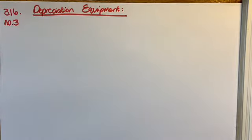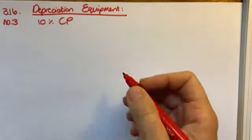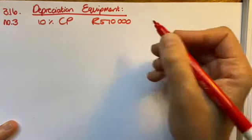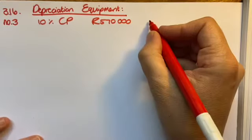So first of all, I just read the facts and kind of jot it down. I've got 10% on the cost price, that's my method. I know that I'm currently sitting on 570,000 for the worth of my equipment.